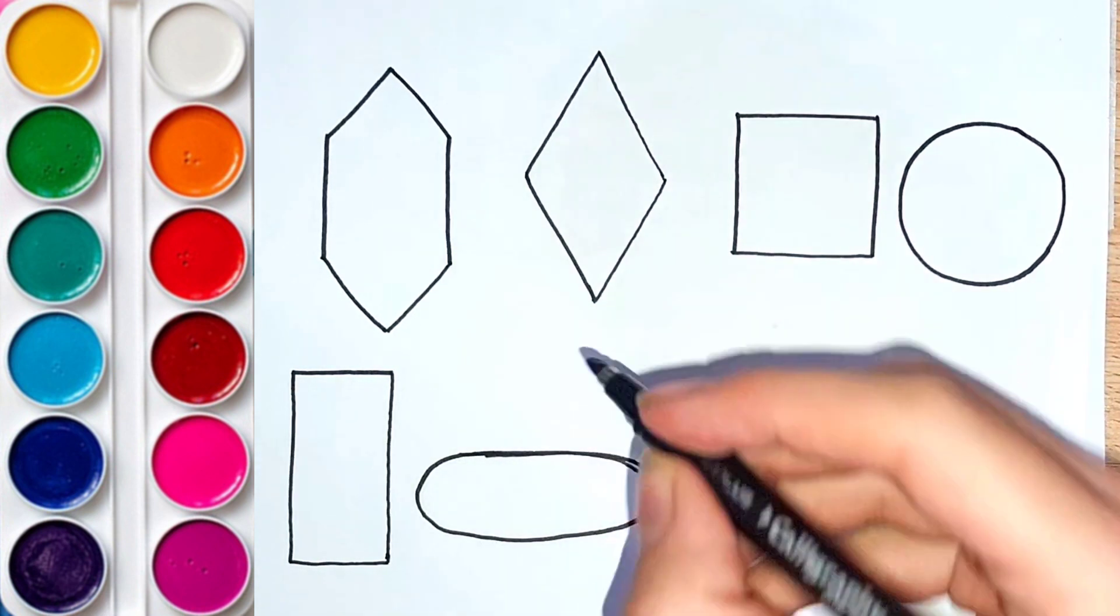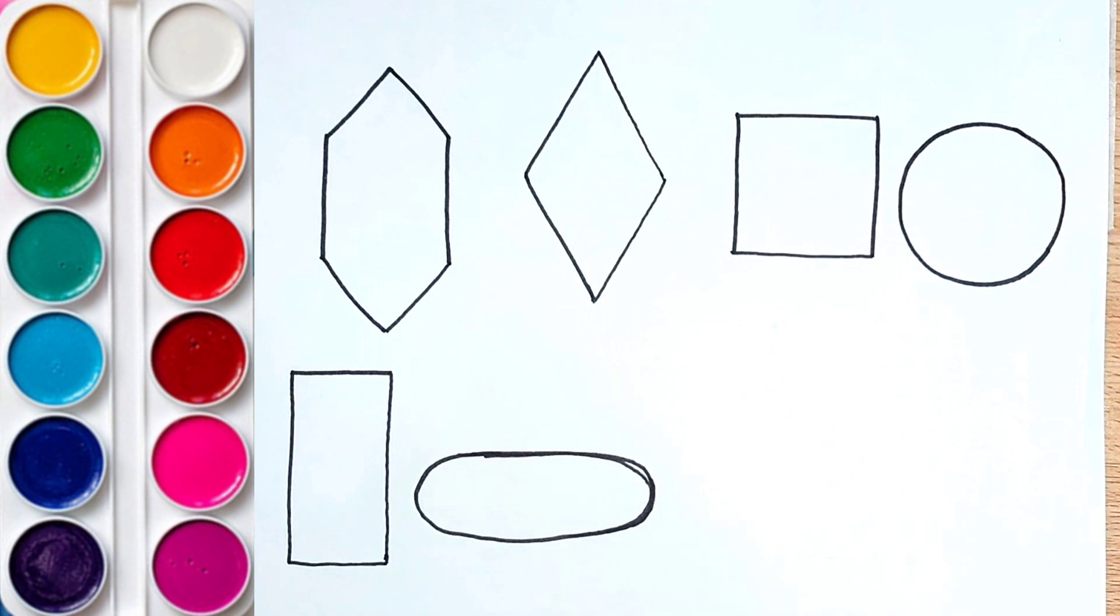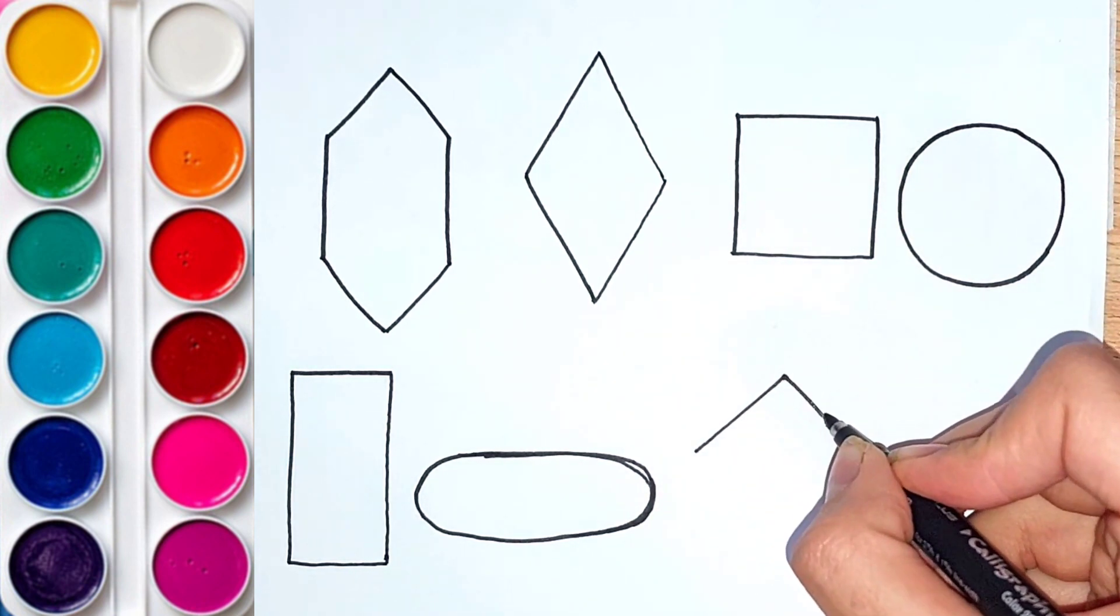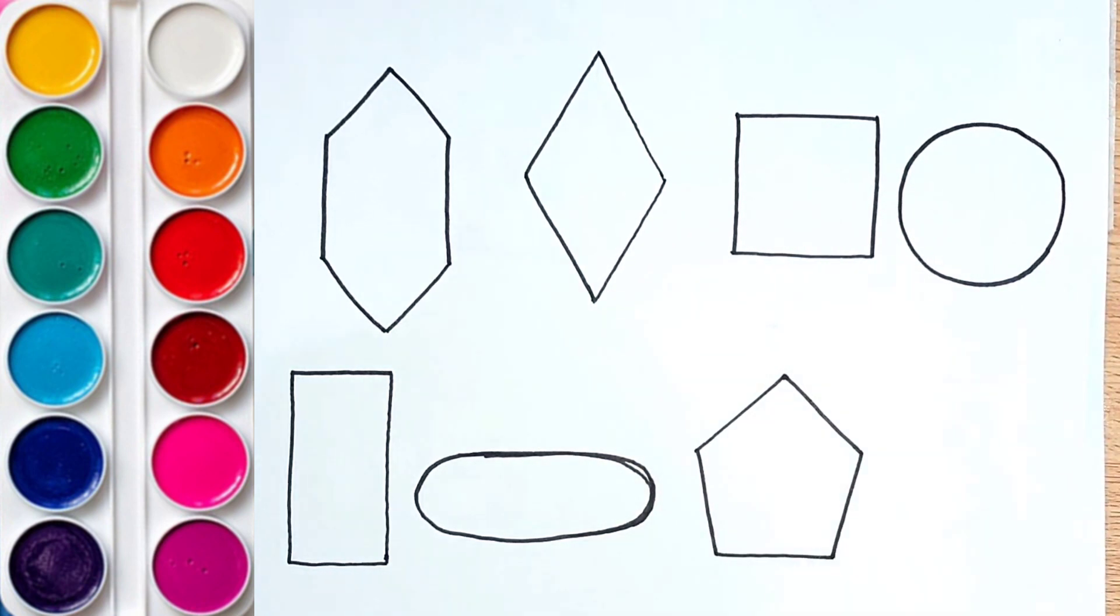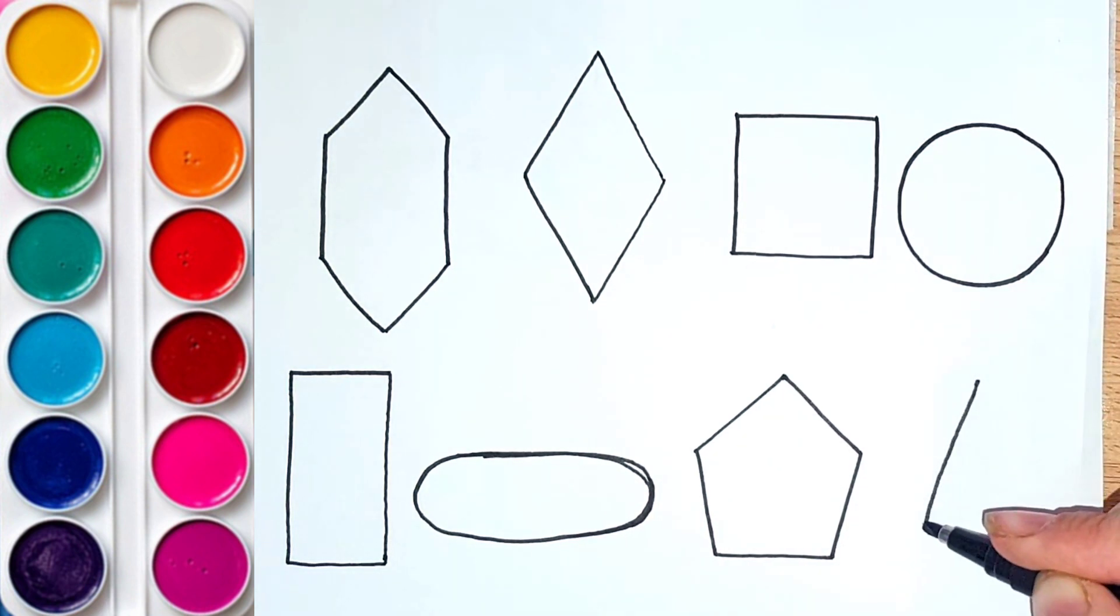This is an oval. Pentagon. And this is a triangle.